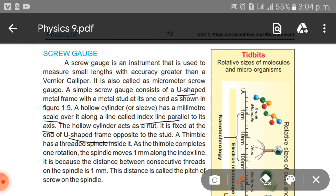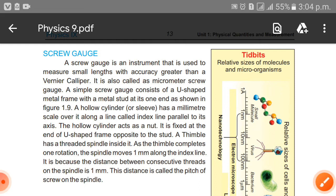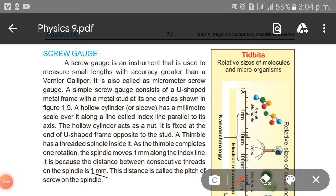A thimble has a threaded spindle inside it. As the thimble completes one rotation, the spindle moves one millimeter along the index line. It is because the distance between the consecutive threads on the spindle is one millimeter. This distance is called the pitch of the screw on the spindle.